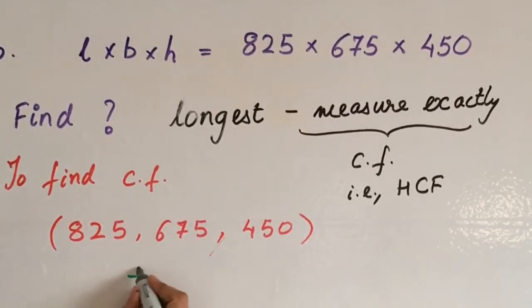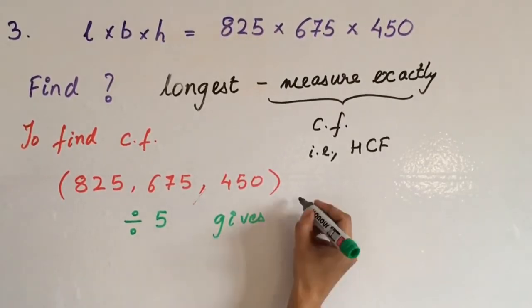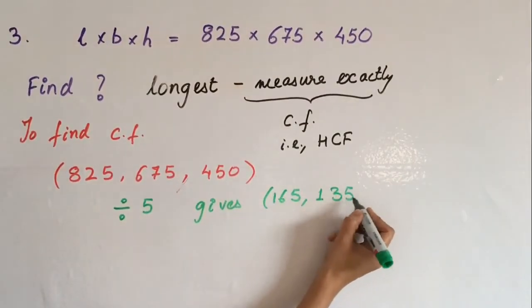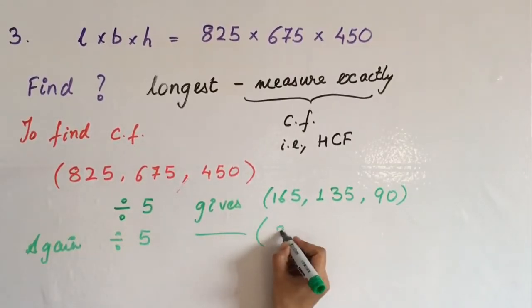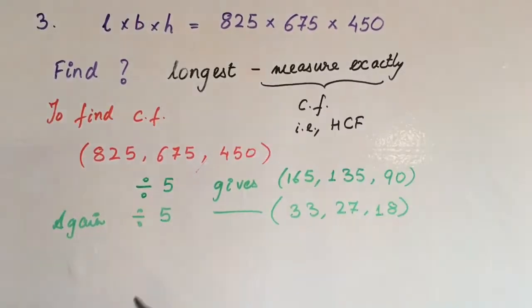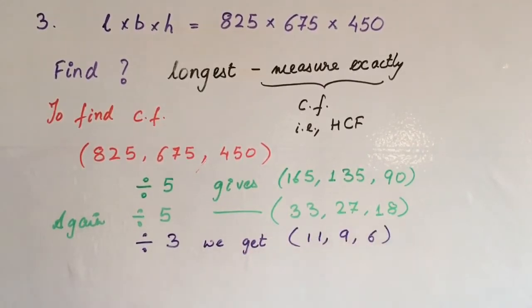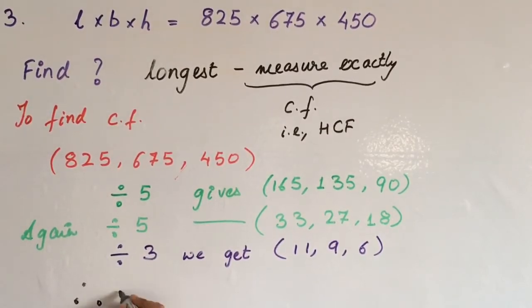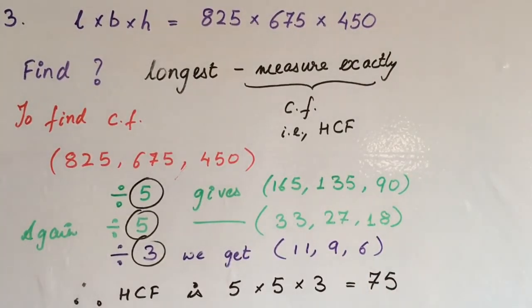Now these numbers are a bit bigger, so we will use the shortcut method. We will see what is the common factor in these three. We are seeing 5 is the common factor, so we will divide these three numbers by 5. Again, we will check that these numbers are divided by 5, so we will divide them by 5 again. Now, these numbers are divided by 3, so we will divide them by 3. After this, there is no common factor in 11, 9 and 6, so we will not do further division. To find the HCF, we will multiply 5, 5 and 3. The product is going to be the HCF. That is 75 cm. This tape will exactly measure the room's dimensions.